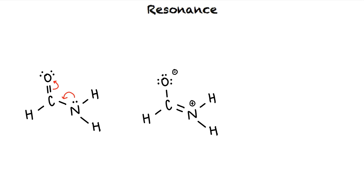However, the structure on the right is much higher in energy than the structure on the left because of the formal charges. Because electrons want to be as low in energy as possible, the structure on the left contributes significantly more to the real structure than the contributor on the right. We call the structure on the left the major resonance contributor and the structure on the right the minor resonance contributor.